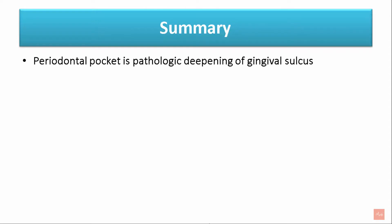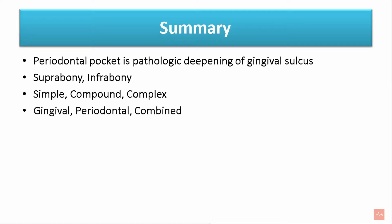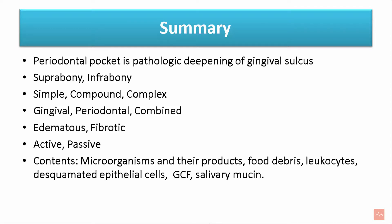To summarize, a periodontal pocket is a pathologic deepening of the gingival sulcus. It can either be suprabony or infrabony. It can be simple, compound, or complex. It can be gingival, periodontal, or a combination of both. It can be edematous or fibrotic, or it can be active or passive. The contents of the periodontal pocket involve microorganisms and their products, food debris, leukocytes, desquamated epithelial cells, gingival crevicular fluid, and salivary mucin.